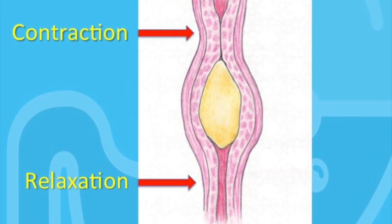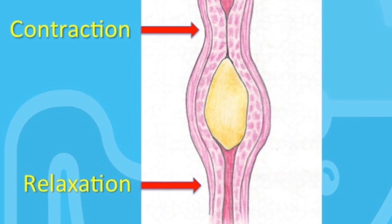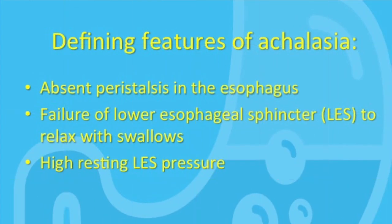Now that we know how a swallow is supposed to work, what happens in achalasia? There are two defining features of achalasia, and they are both necessary to make the diagnosis. First, there is no peristalsis in the distal two-thirds of the esophagus. Second, the lower esophageal sphincter does not relax during a swallow. Other abnormalities can also occur, including a high resting pressure of the lower esophageal sphincter and spasm in the distal esophagus. However, they do not occur in all patients with achalasia and are not necessary to make the diagnosis.